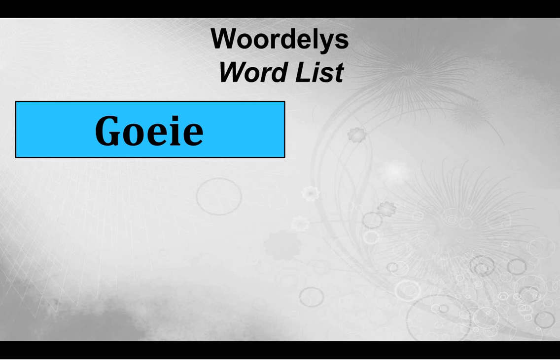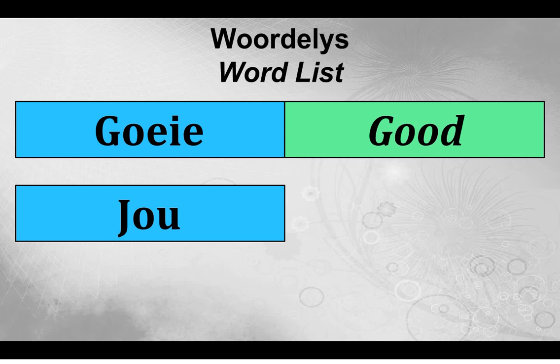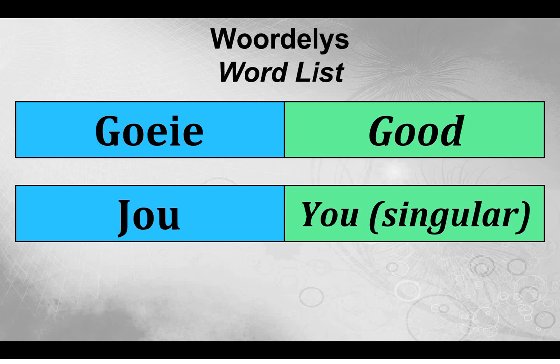Goeie. Goeie means 'good.' Jou. Jou is 'you' in singular form. So when I'm talking to one person I'll use the word jou.